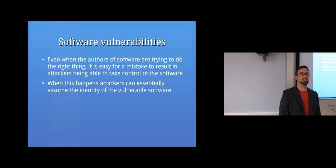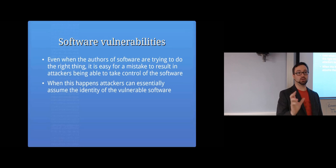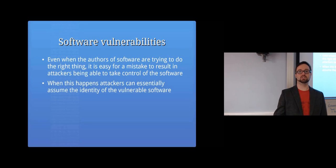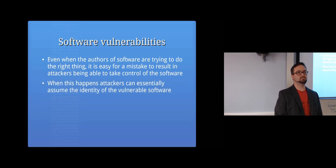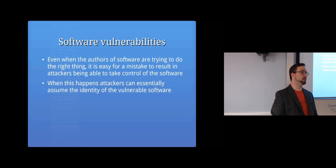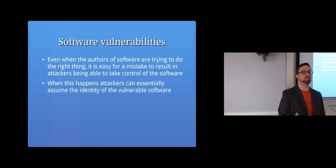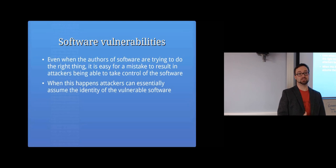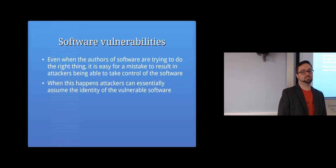As we discussed in the first week, Linux and Unix security is based on the idea that each program runs with the authority of the user that started it. If you start up Firefox and trust Mozilla, but a programmer at Mozilla made a programming mistake, an attacker could take control of Firefox on your computer and therefore do anything you can do on that computer.